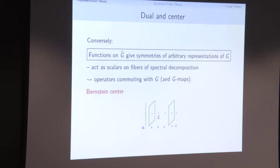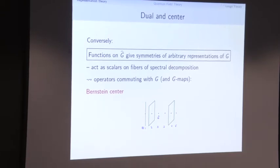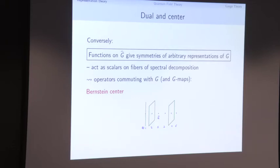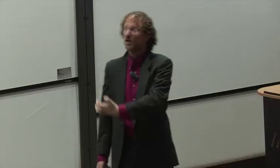We can also take that logic backwards. If we want to understand the dual, let's think about what a function on the dual would do. A function on the unitary dual acts by symmetries on any representation of G: any representation of G breaks into a family of vector spaces, and the function acts by that scalar on each piece. That tells us that functions on the dual are a kind of center — they act by symmetries of arbitrary representations of G and commute with all maps of representations. This is called the Bernstein center in representation theory.